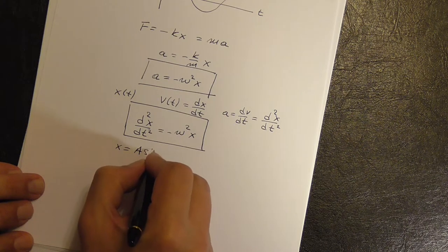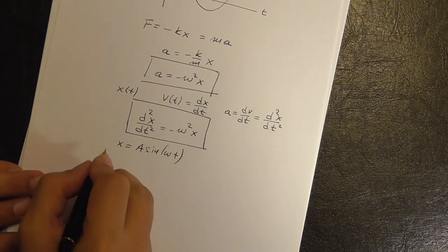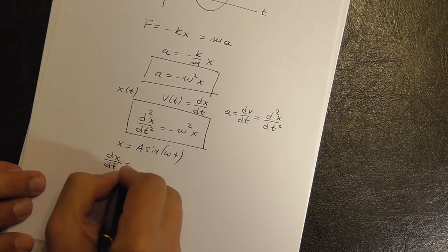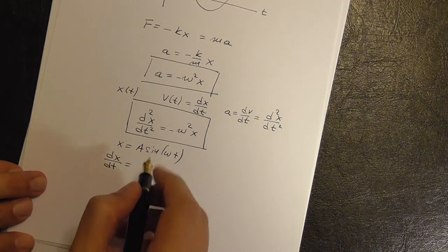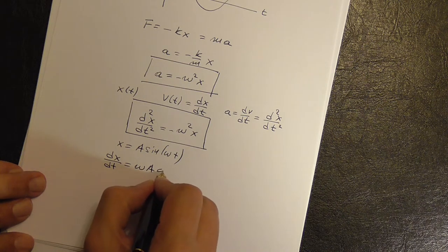What is the first derivative of that? You will get an omega, A, and sine becomes a cosine.